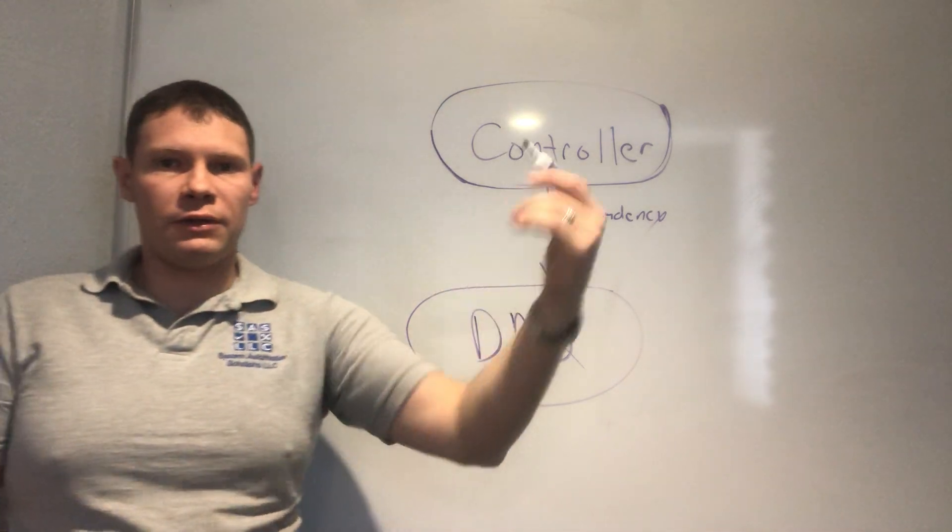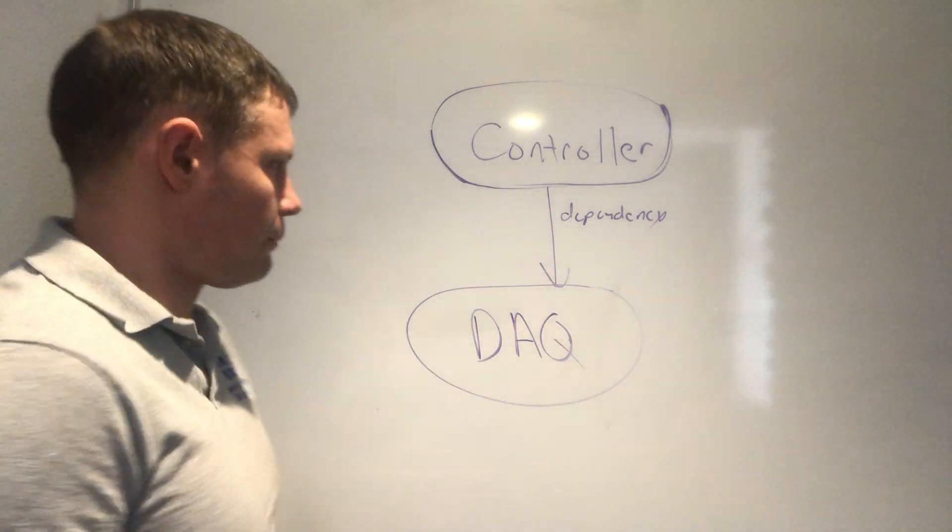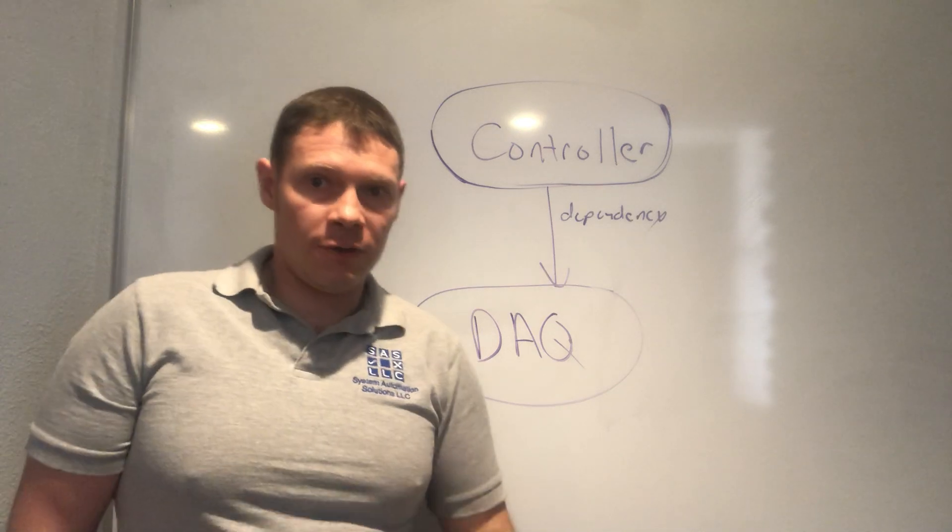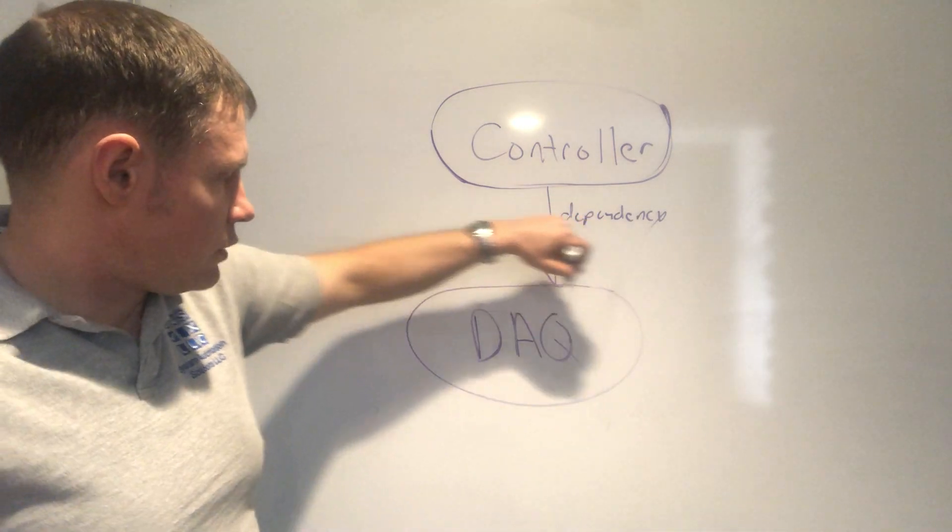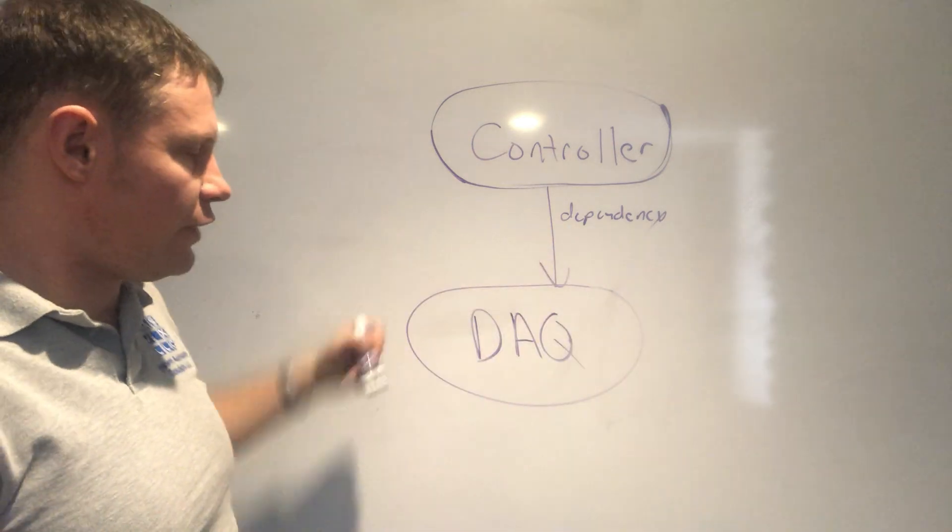So that's what we want our arrow to look like, but how do we set up the messaging between these two so that happens? The first step is all the messages, broadcast and request messages, are going to be owned by the DAC module.